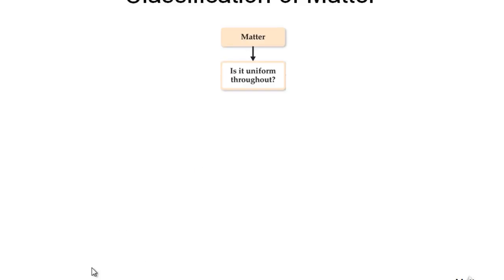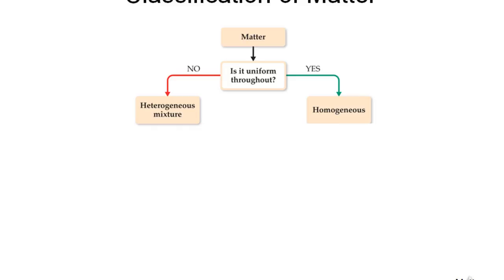We are going to classify matter in this tree diagram. Matter, as we said, is anything that can occupy space and has mass. Now we ask whether it is uniform throughout. If it is the same throughout, then we say it is homogeneous — meaning it has uniform composition. If it doesn't have uniform composition, then we call it heterogeneous or a heterogeneous mixture.